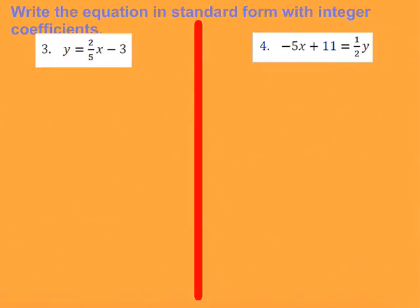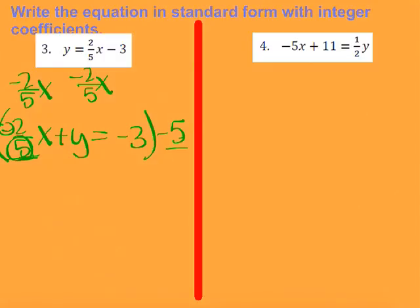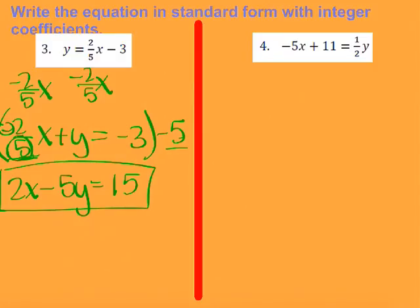Let's take a look at number 3. Standard form also has to have integer coefficients — it needs to be a whole number. First I get my X's and Y's on the same side by subtracting negative 2 fifths X over, giving plus Y equals negative 3. I notice there's a fraction divided by 5, and my first number is negative, so I'm going to multiply everything by negative 5. Negative 5 times 2 fifths — the 5s cancel and the negatives cancel — leaving just 2. Negative 5 times Y is negative 5Y, and negative 3 times negative 5 is positive 15. That's my final answer for number 3.